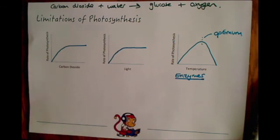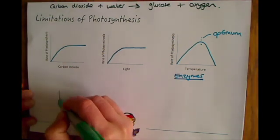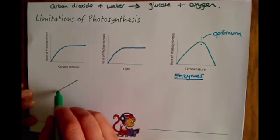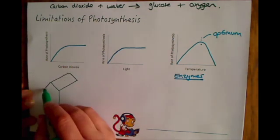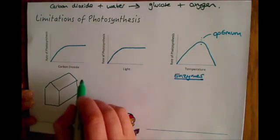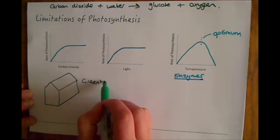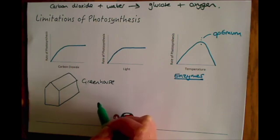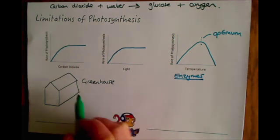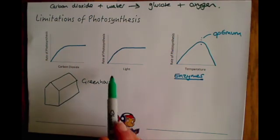Where this becomes important is commercially growing fruit and vegetables. For example if you had a greenhouse where you wanted to grow some fruits and vegetables, you would want to make sure that you are maximizing your carbon dioxide, your light and your temperature levels to get the best rate of photosynthesis possible. Obviously these are always made out of glass to maximize the light level going in there. Some people might want to put lights in addition to that.